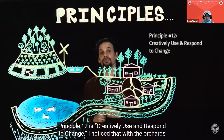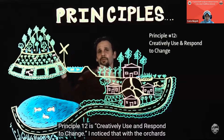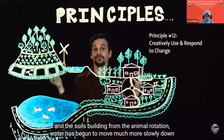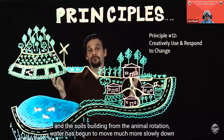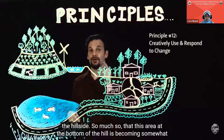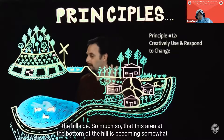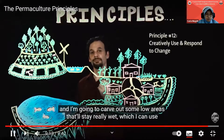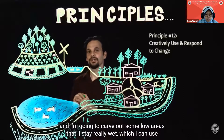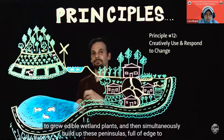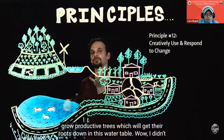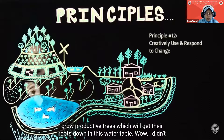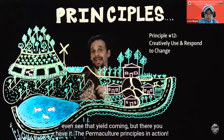Principle twelve is creatively use and respond to change. I noticed that with the orchards and hedgerows growing in, the forest soils growing spongier from mushroom inoculation, and soils building from animal rotation, water has begun to move much more slowly down the hillside — so much so that the area at the bottom of the hill is becoming somewhat of a marsh. I'm going to creatively use that change, carving out low areas for edible wetland plants while building up peninsulas full of edge to grow productive trees. I didn't even see that yield coming — but there you have it: the permaculture principles in action.